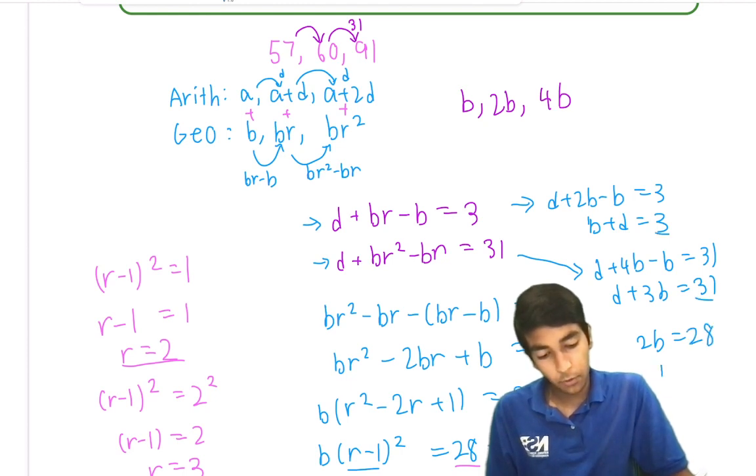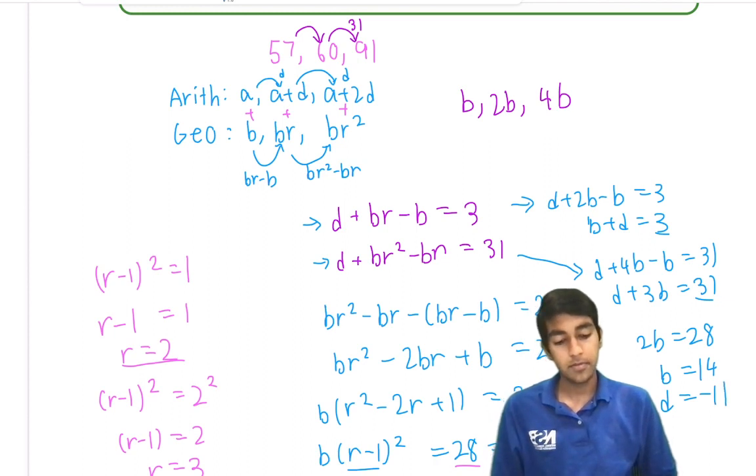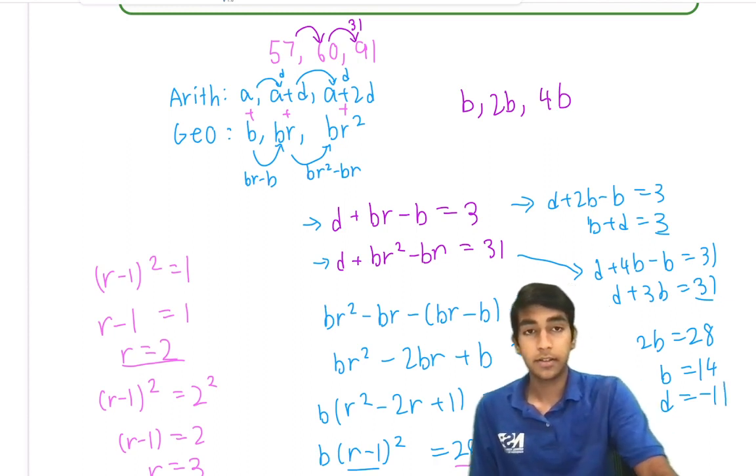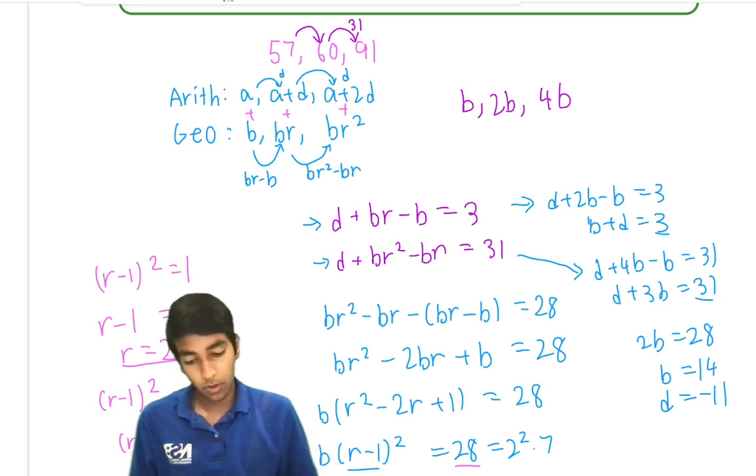So that means 2b is this minus this, 28. b is 14, d is negative 11.